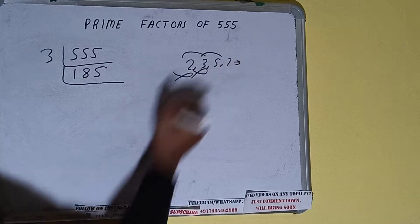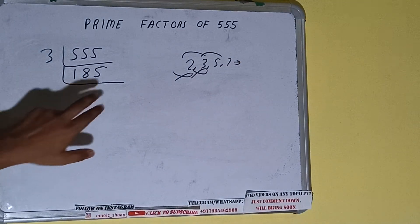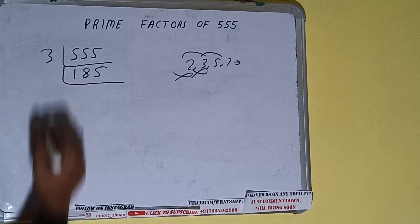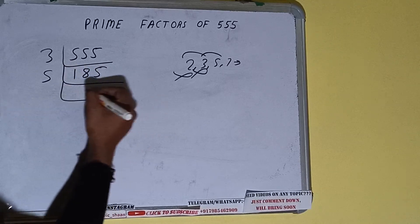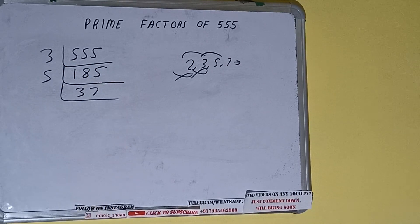So we'll check with the next lowest prime number, that is 5. The last digit is 5, so it is divisible by 5. So divide it. 185 divided by 5 equals 37.